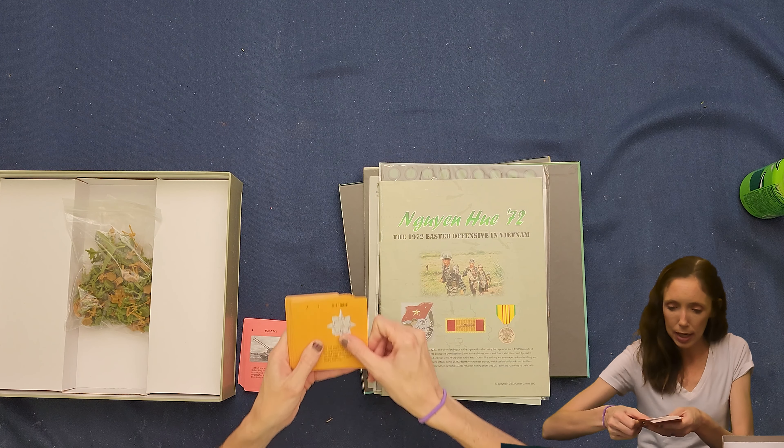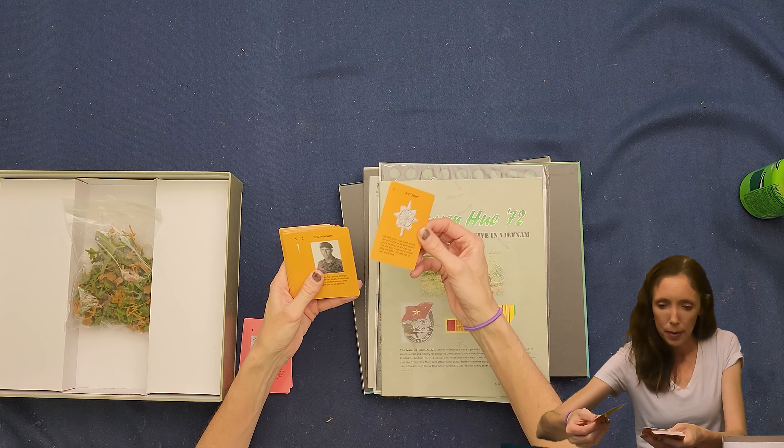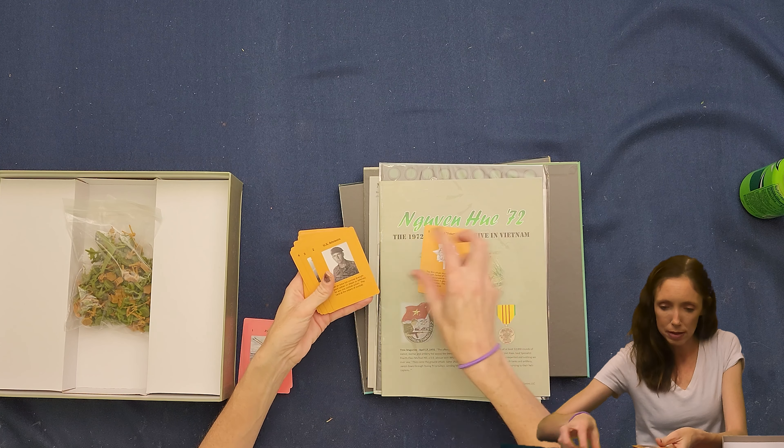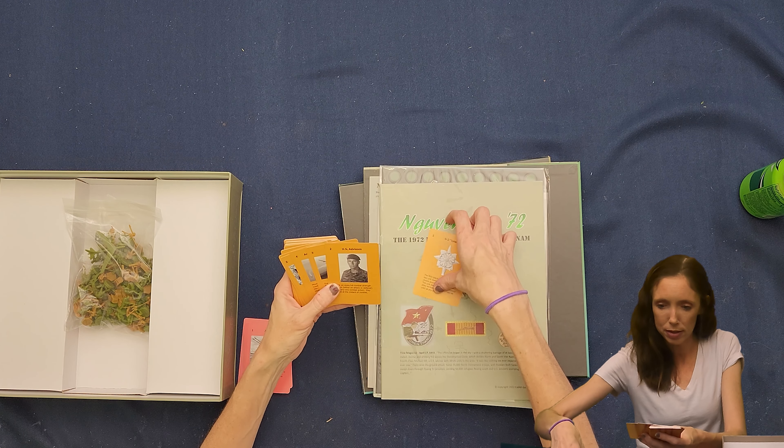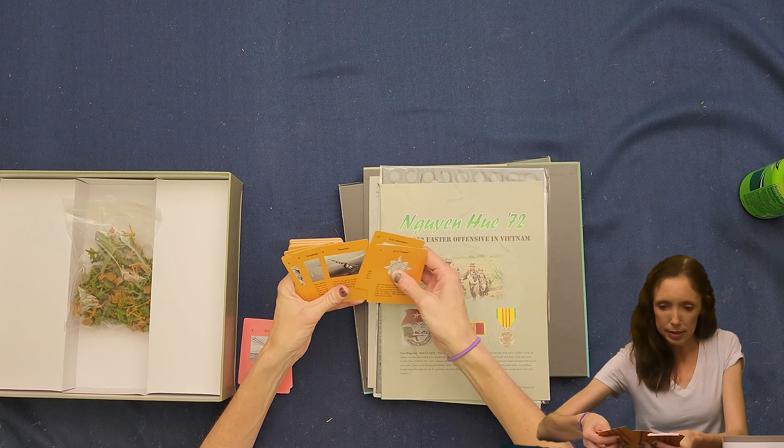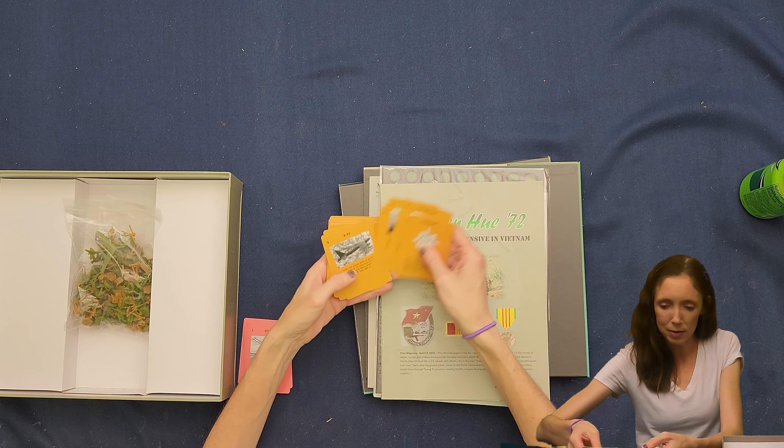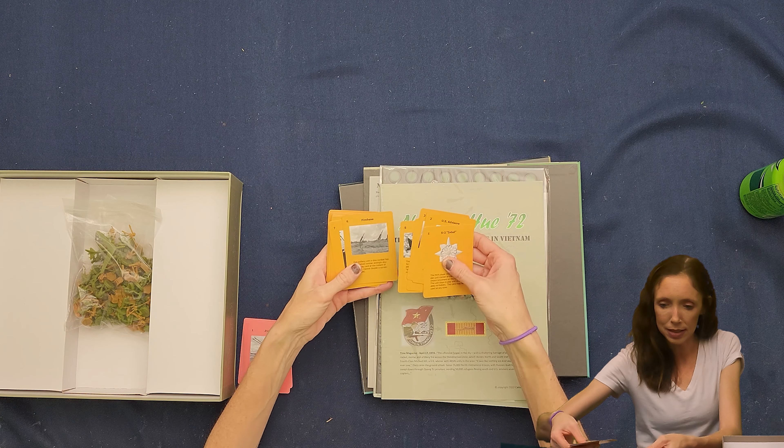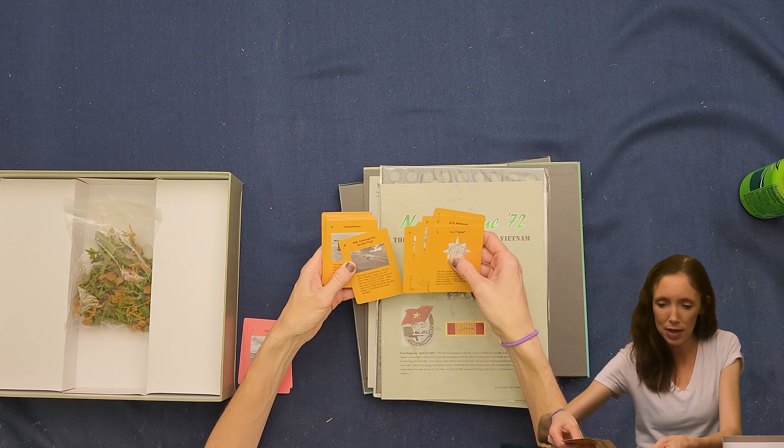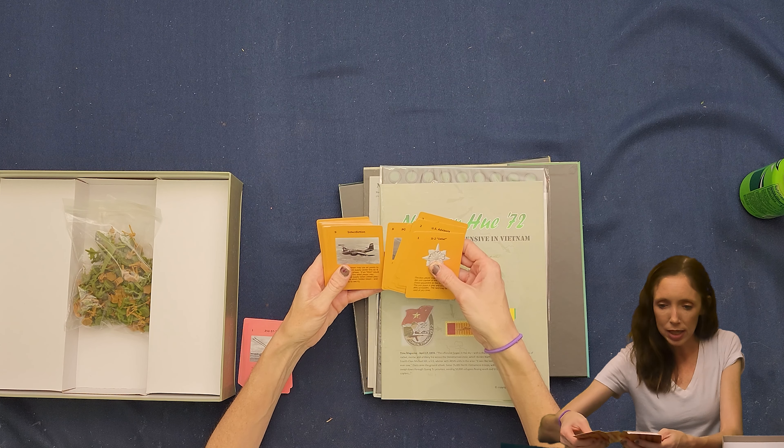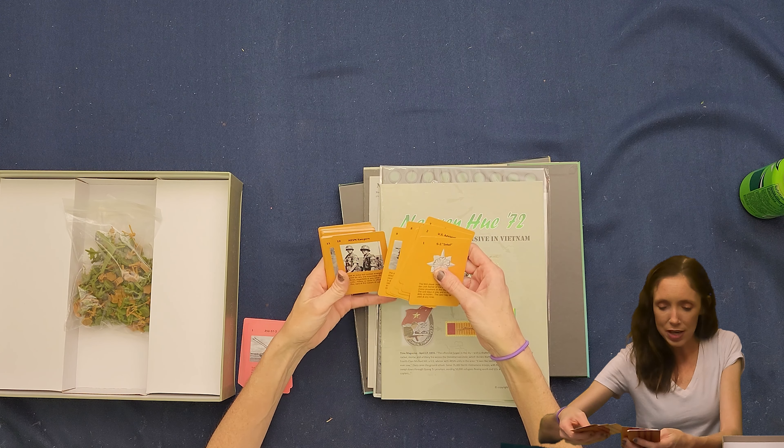These look kind of similar, but for the U.S. So we have like U.S. Advisors, Spectre, Amphibious Move, some planes, Firebase, U.S. Navy, Interdiction, ARVN Rangers. What does that stand for? Why can I not American